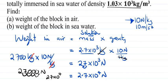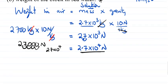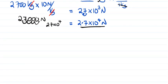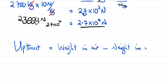Now we need to find the weight of the block in seawater. Using the formula for thrust force: thrust force equals weight of the object in air minus weight of the object in water. So we rearrange to get weight in seawater equals weight in air minus thrust force.